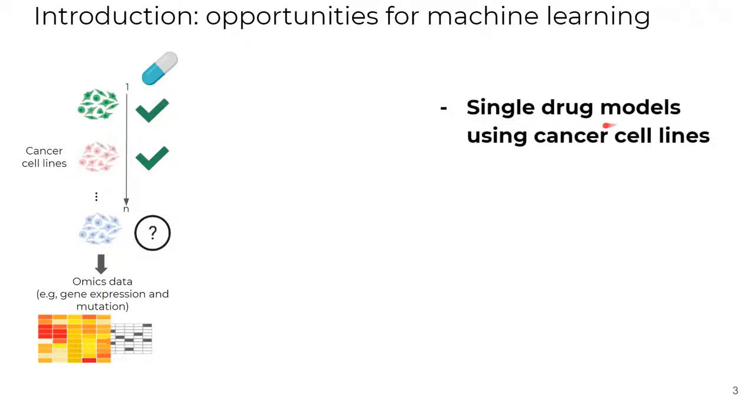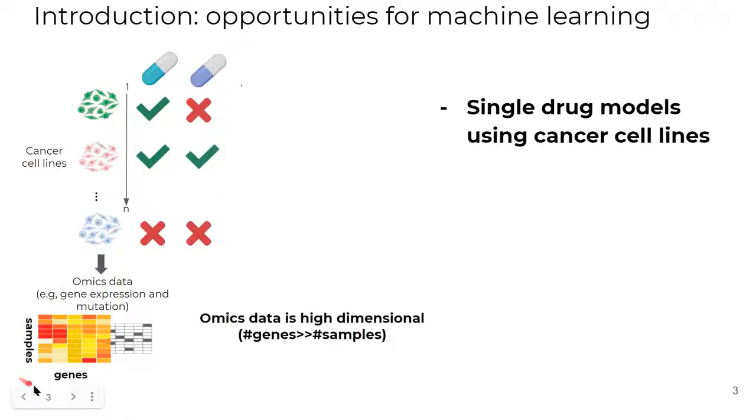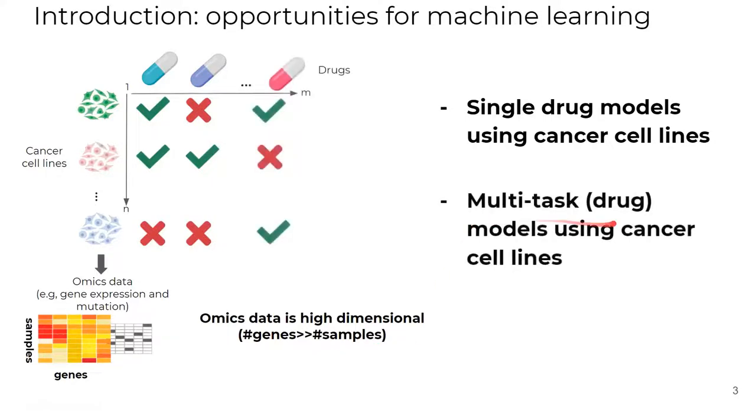A large number of the current approaches rely on the single-drug model paradigm. Here, the approach works by training a model per drug, given a dataset of N cell lines. You can repeat the same procedure to a second drug, and so on. However, the limitation here lies in the fact that omics data is high-dimensional.